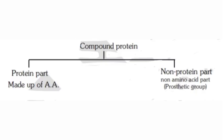Compound proteins are classified into two parts: the protein part and the non-protein part. The protein part is made up of amino acids, while the non-protein part is called the prosthetic group. Compound proteins are generally seen in enzymatic proteins.